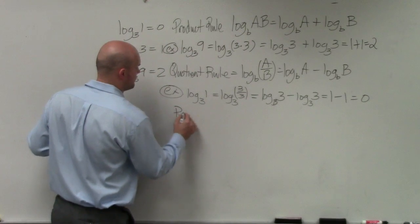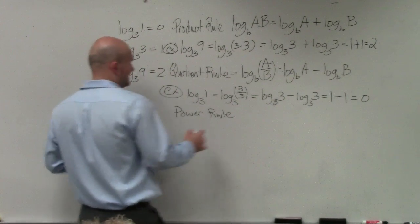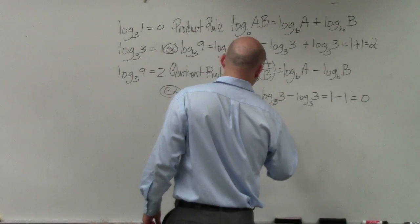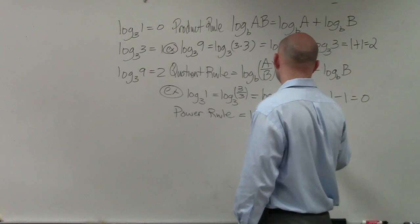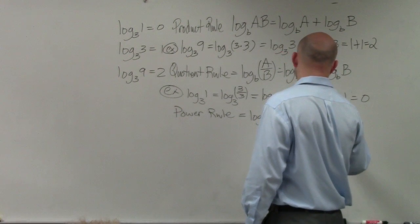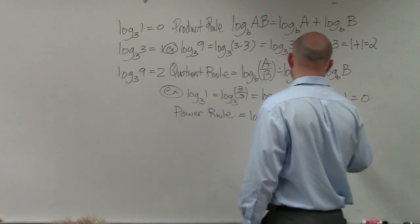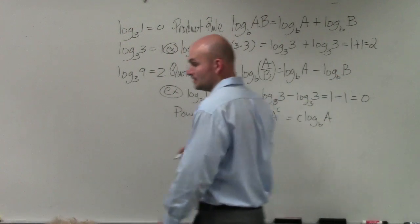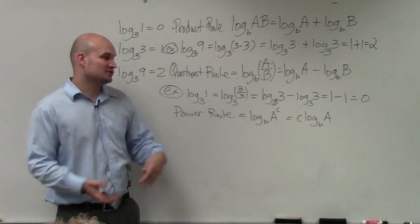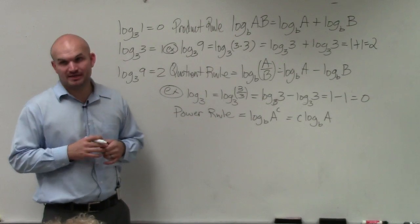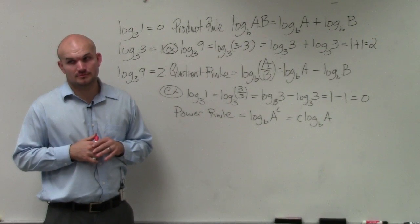And the last one is what we call the power rule. And the power rule goes like this. If you have log base b of a raised to the c, that's equal to c times log base b of a.